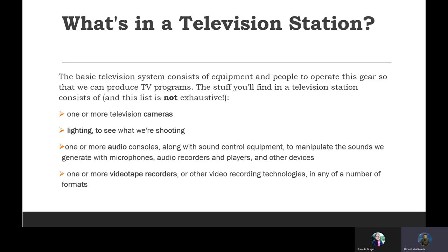The stuff you'll find in a television station consists of: one or more television cameras; lighting to see what we are shooting; one or more audio consoles — audio equipment along with sound control equipment to manipulate the sound, which is generated with microphones, audio recorders and players, and other devices.